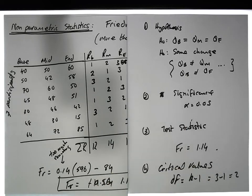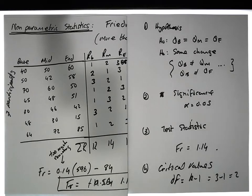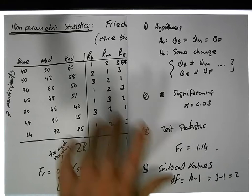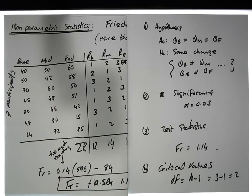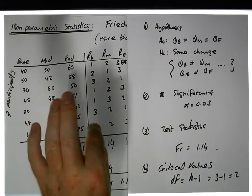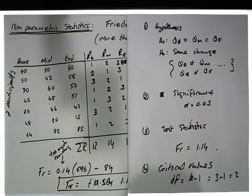Now we have the significance level and the degrees of freedom, so we can find our critical value. Once we have our critical value, we compare the test statistic to the critical value. If the test statistic is bigger than the critical value, we reject — that's the typical approach.